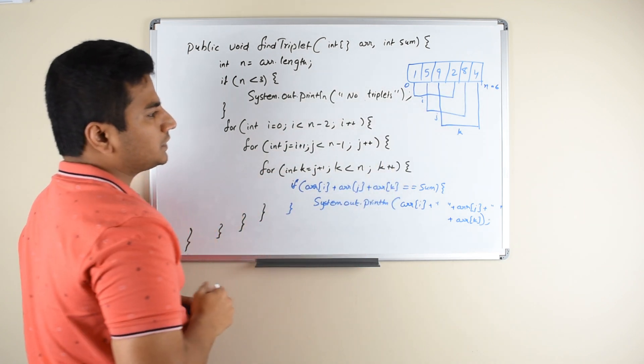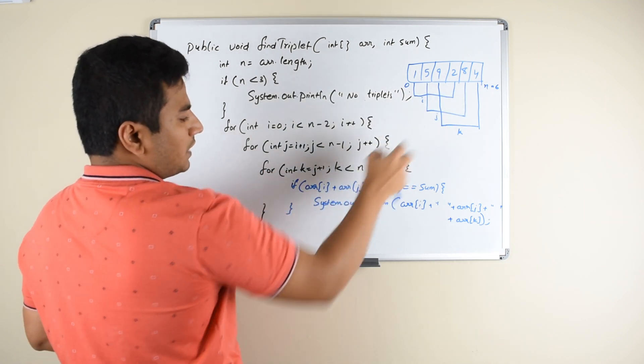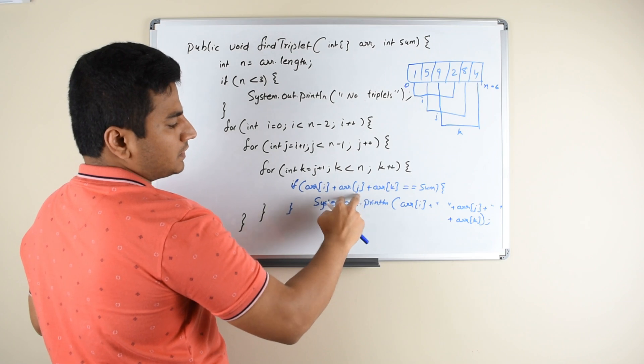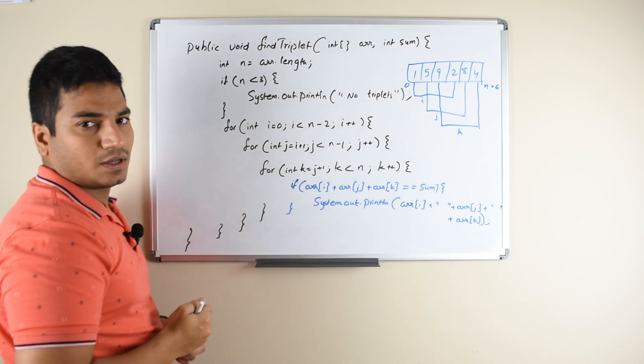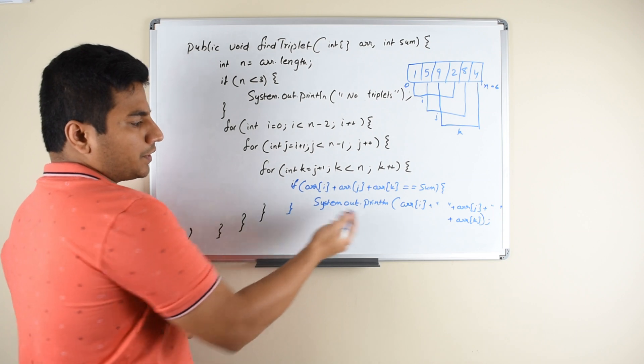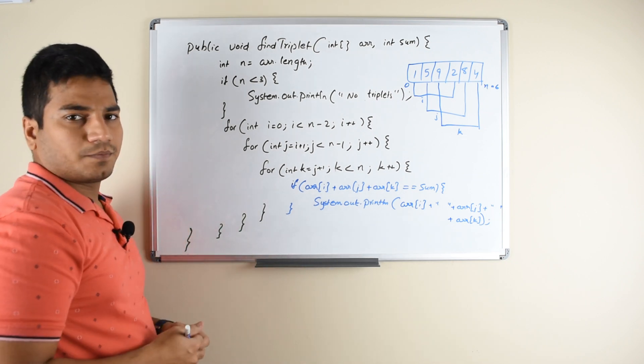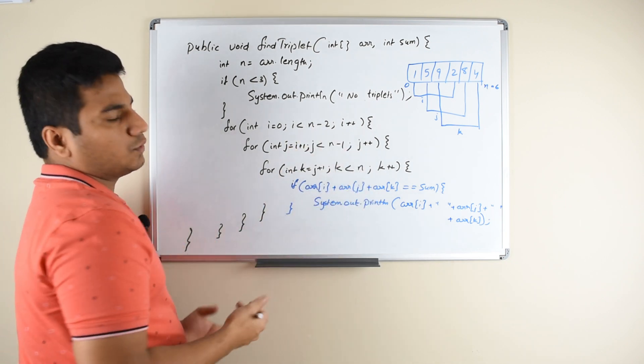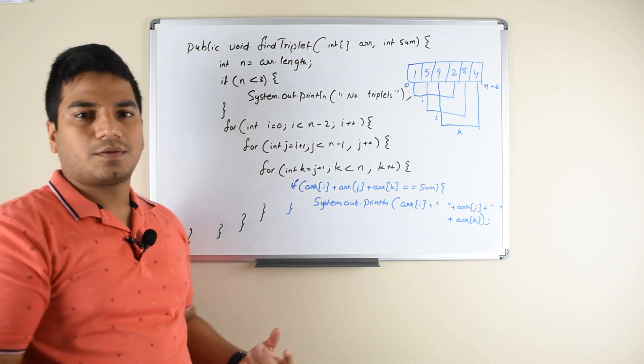Once you find a triplet, you try to see if the summation of this triplet is equal to the given sum. If it equals the given sum, you print out that triplet and you are good. If you don't find anything, you won't be printing anything.